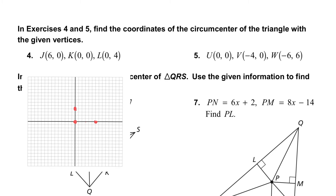Recall that a circumcenter is where the perpendicular bisectors intersect, so I really only need to find two of them. The easiest ones to find are the two sides along the axes. This side has a length of six, so halfway would be at three — the perpendicular bisector goes that way. The other side goes from zero to four, so halfway is at two, and the perpendicular bisector goes that way. That is the point where they intersect, and that's at (3, 2). So three comma two is the circumcenter for this one.